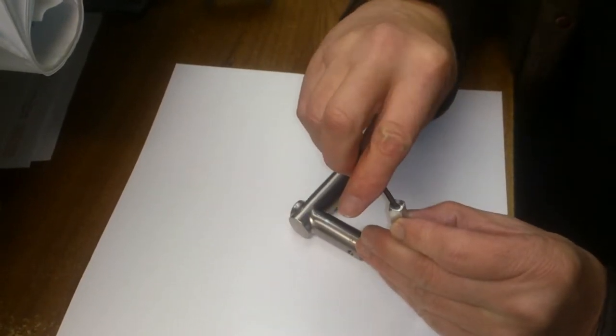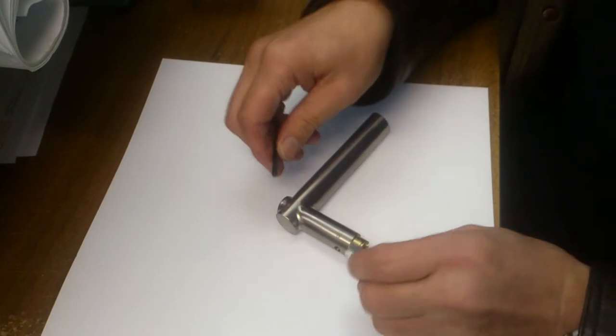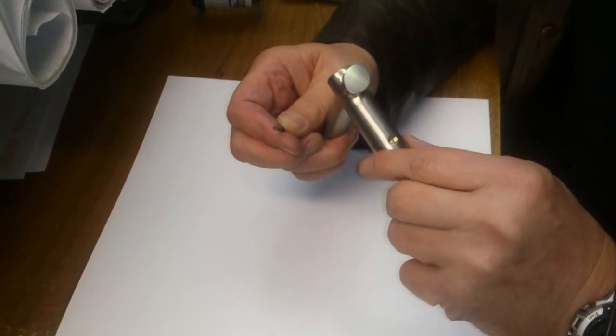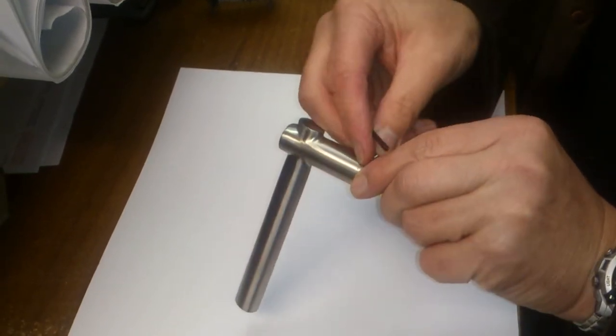You'll see there's an off-center hole in the spindle and a thin part. The thin part marries up with the grub screw, which has a little point in it.